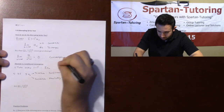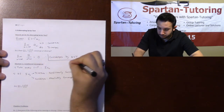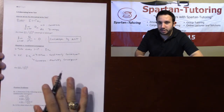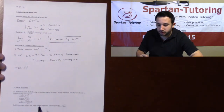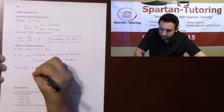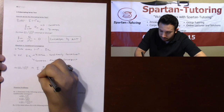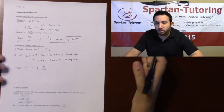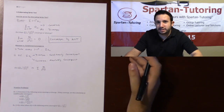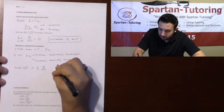Since it converges, the follow-up question is: is it absolutely or conditionally convergent? Take away the negative one to the n and you have a brand new series: square root of n over n squared plus one. Since this is all polynomials — n raised to powers — this calls for the limit comparison test. Choose b_n wisely.